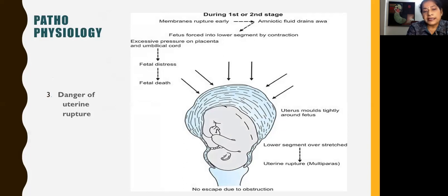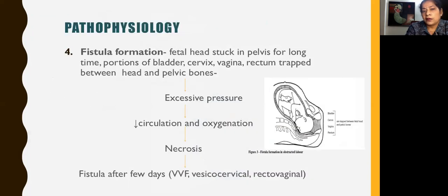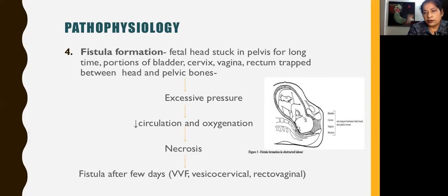In these cases there is always a danger of uterine rupture. A second complication is fistula formation. The fetal head gets stuck in the pelvis for a longer time. Parts of the bladder, cervix, vagina, and rectum get entrapped between the fetal head and the pelvic bone. This causes excessive pressure on these tissues, which reduces their circulation and oxygenation, leading to necrosis. The necrosis is not visible immediately but appears after a few days when the whole tissue has sloughed off, resulting in formation of a vesicovaginal fistula, a vesico-cervical fistula, or a rectovaginal fistula.